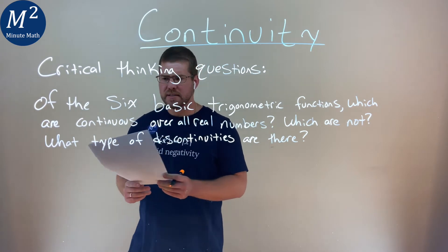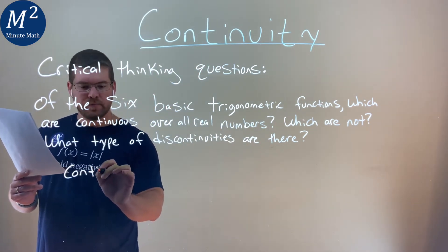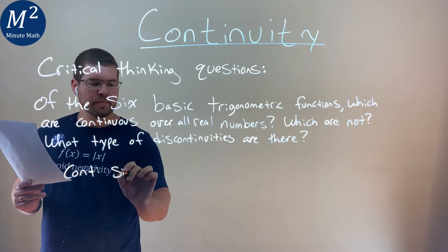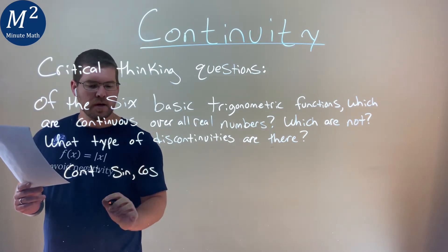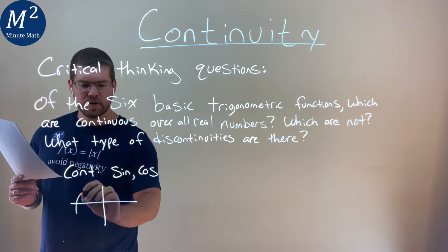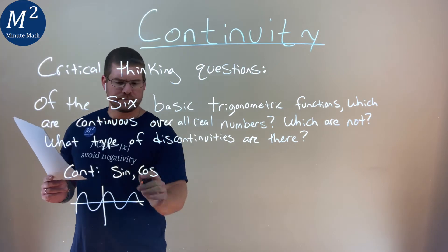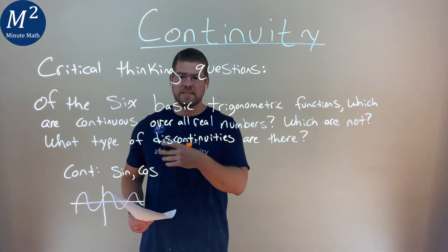Which ones are continuous? Well, the only continuous ones I know of are sine and cosine. Sine and cosine have a basic shape like this. It can go on forever, up and down, and it's continuous everywhere.